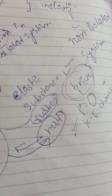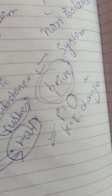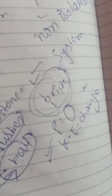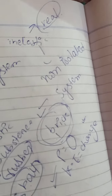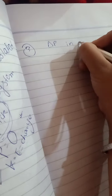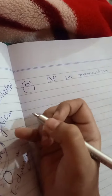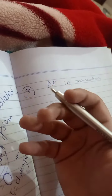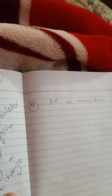The third thing is the change in momentum. The law of conservation of momentum is valid when an isolated system is present. This is the main point.